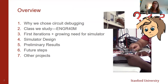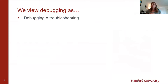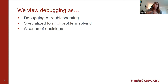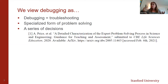We use the word debugging and troubleshooting interchangeably. There's some controversy about this within the education world — some people say the word debugging is only for CS. But my advisor is a professor in both the CS and EE departments, and we strongly feel that debugging also applies to circuits. Debugging is a specialized form of troubleshooting, and there's been a lot of research done in the education world about problem solving. We subscribe to the philosophy that it is a series of decisions, and there's been a lot of work done on that by Carl Wyman's group at Stanford University.